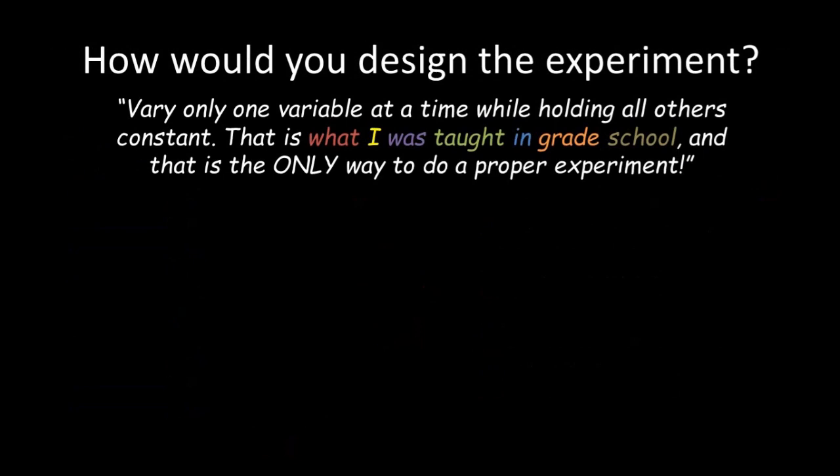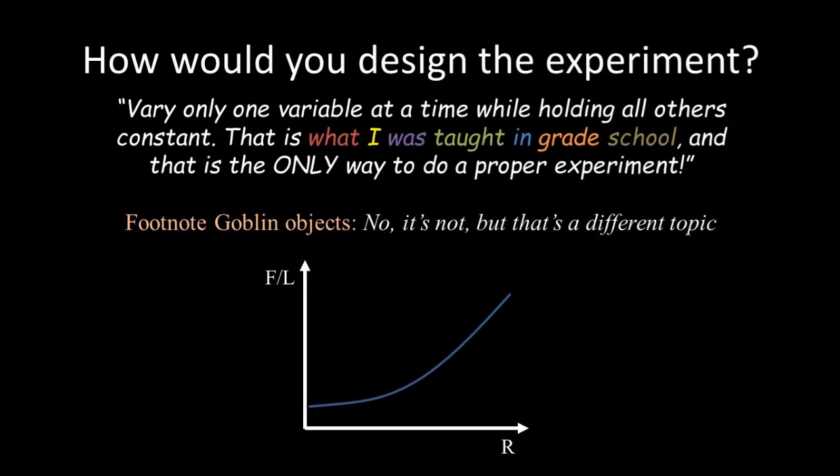We will work through this question in more detail later, but just trust me for now. The drag force, per length of cylinder, varies as a function of four other variables: radius of the cylinder, speed of the flow, viscosity of the fluid, and density of the fluid. So what would your experiment look like? Well, you might think that to be scientifically rigorous, you have to perform multiple experiments, varying one variable at a time, while holding all others constant.